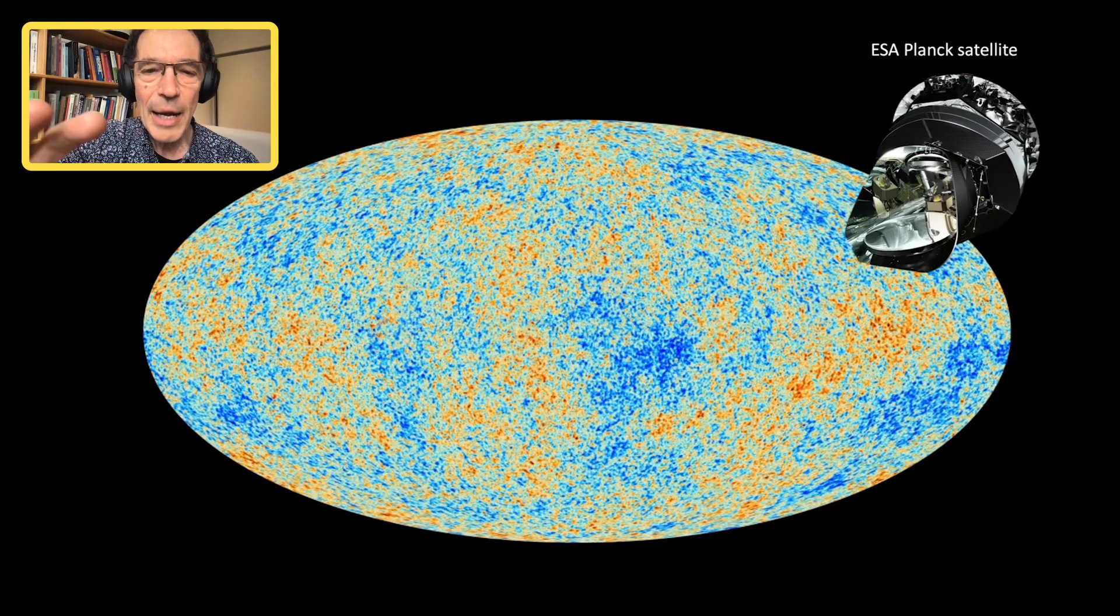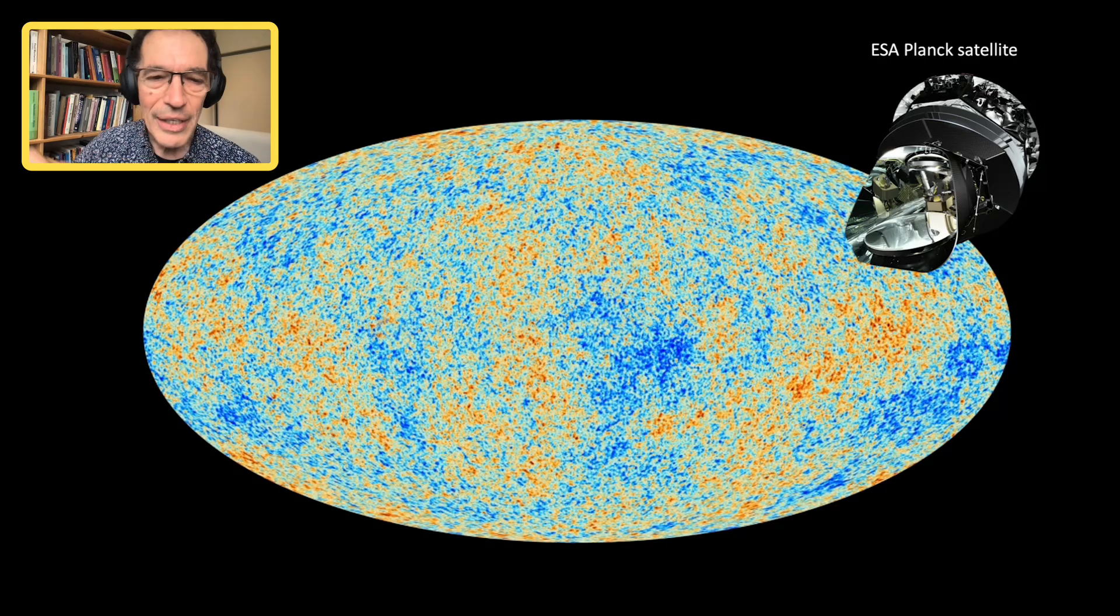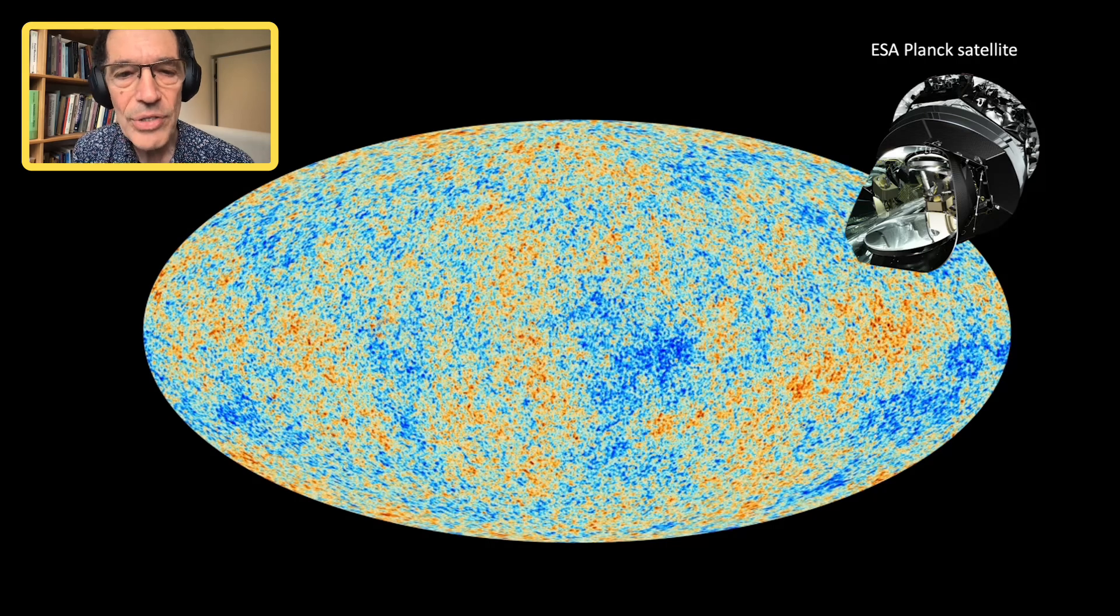This picture shows a projection onto a plane of that two-dimensional spherical surface which surrounds us, called the surface of last scattering. This is very much like a map in an atlas representing the surface of the Earth. This is a two-dimensional map representing the sphere that surrounds us.